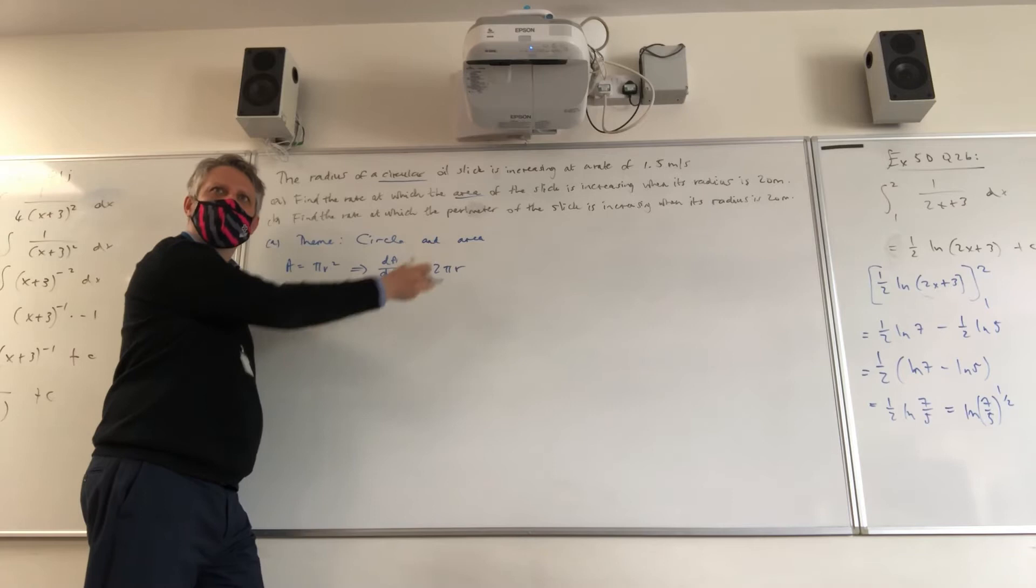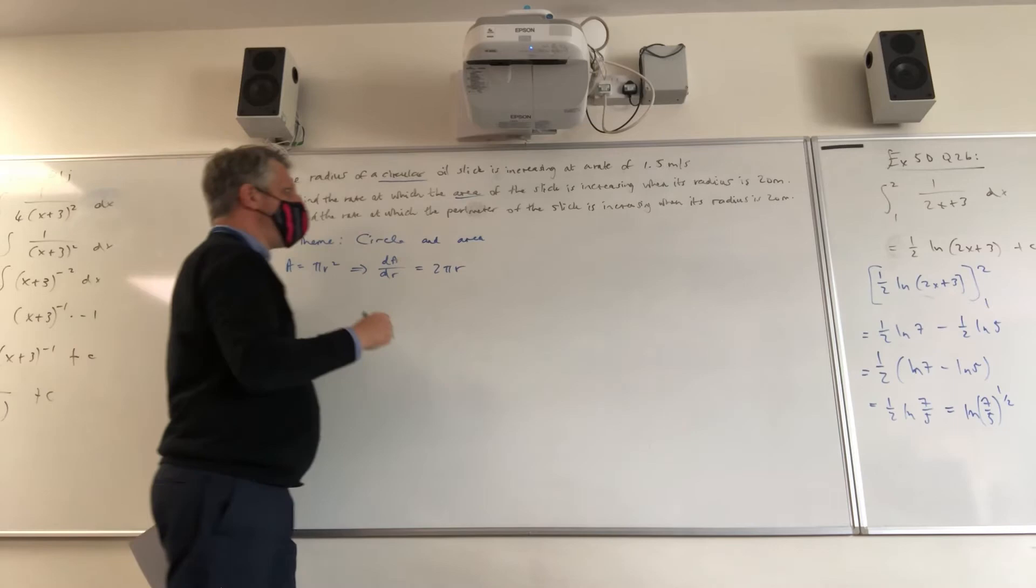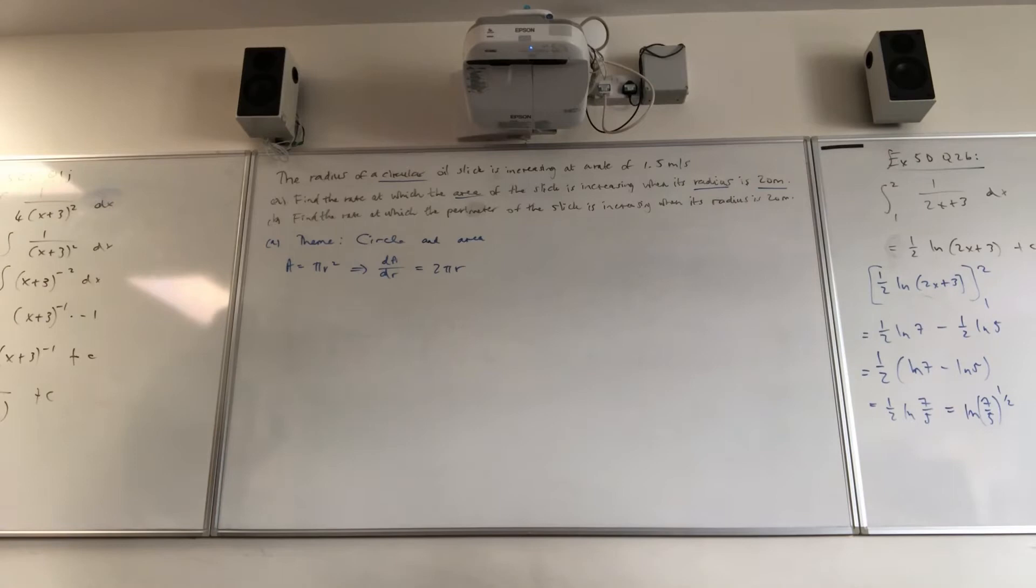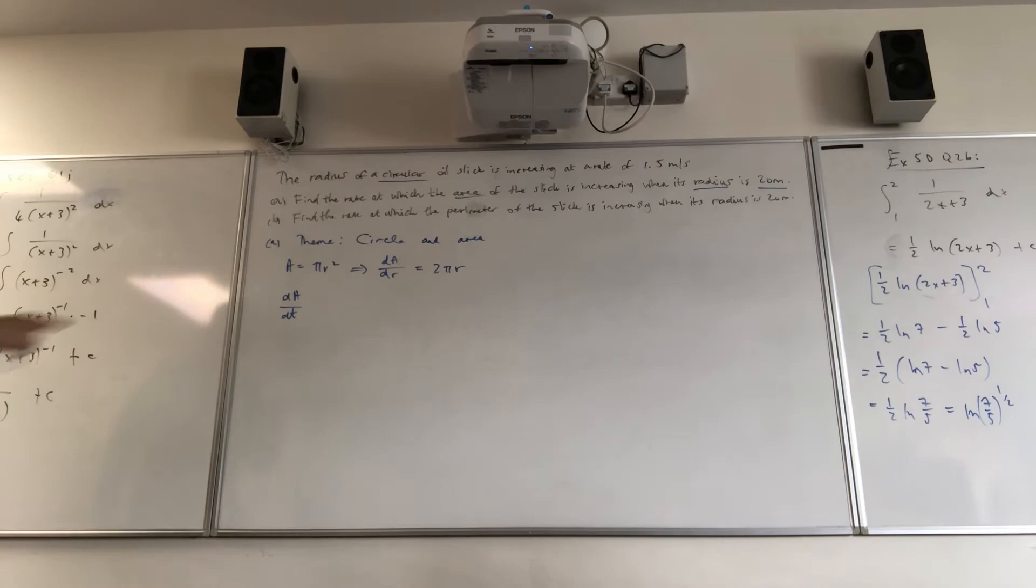So, do we know anything else at this stage about this? Well, we know that r is 20. So that's quite useful. So I suppose I need to ask myself, well what is the main goal of this question? Well, it's looking at the rate at which area is changing. So if I look at that in terms of the change of the area over time, that would make the most sense to me. What's happening over a period of time? So how is the area changing over time?